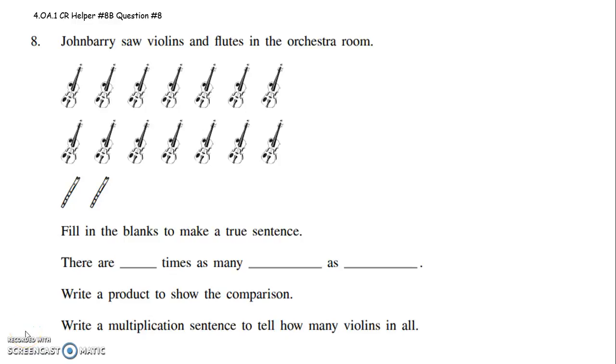Alright, 6th graders, this is to help you with question 8 on CR number 8, version B. It says, Johnny Barry saw violins and flutes in the orchestra room.